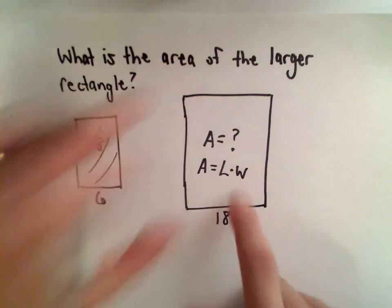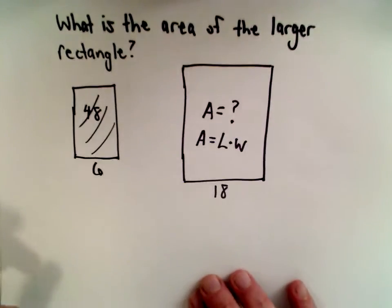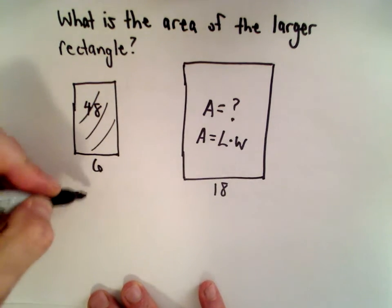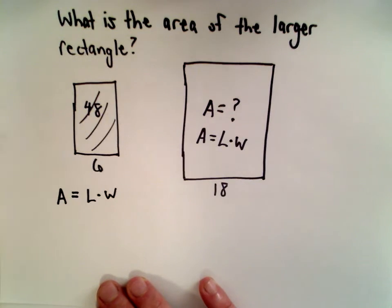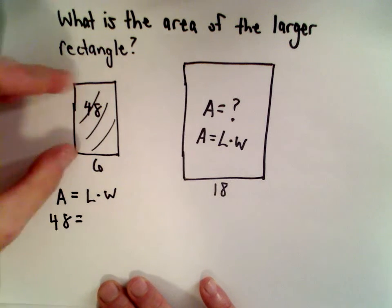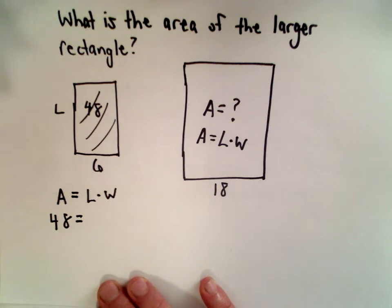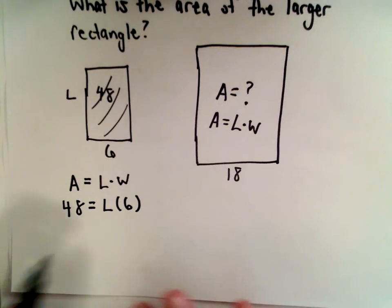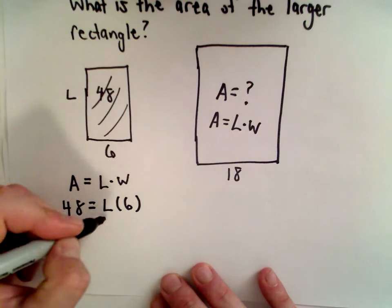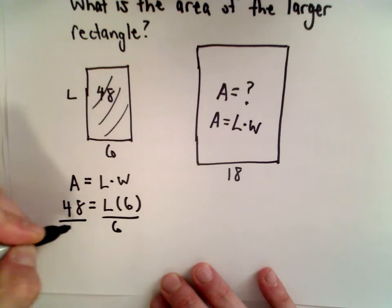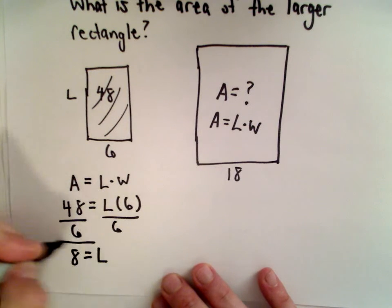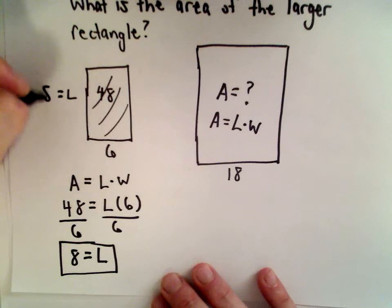Or if you want to think about it as the height times the width. The area of the smaller rectangle, let's use our formula. So length times width. So we know it has an area of 48. So we'll call this the length L. Its width is 6. To simply solve for the length, we'll just divide both sides by 6. 48 divided by 6, that's going to give us 8. So we know that this side length is 8.